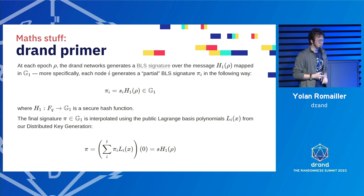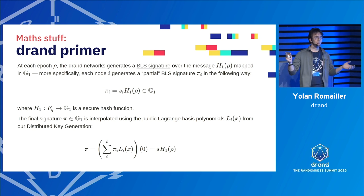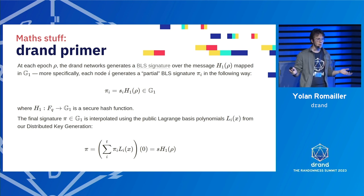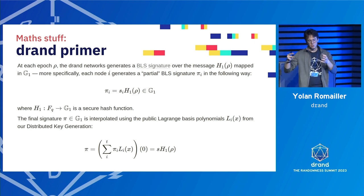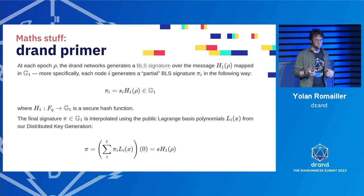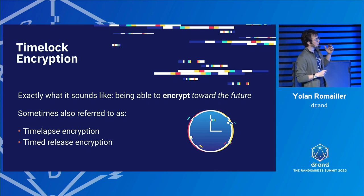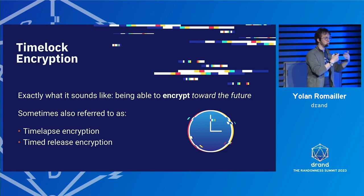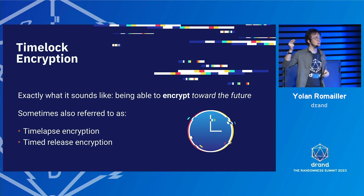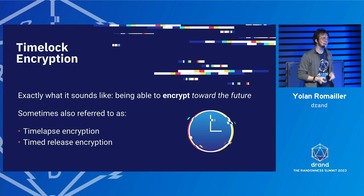To generate signatures, at each epoch we have a round number and generate a signature for that round number. We map the round number onto the group as a point on the elliptic curve, multiply it with the secret shares of each node to create partial signatures, and the final signature is aggregated using Lagrange interpolation. We end up with a value equal to the group secret s times the mapped round — h1(ρ) — and that value will be on g1. So how can we do time lock encryption with it? Time lock encryption is the idea that you want to encrypt a message you know now so that it cannot be decrypted until a given time in the future.